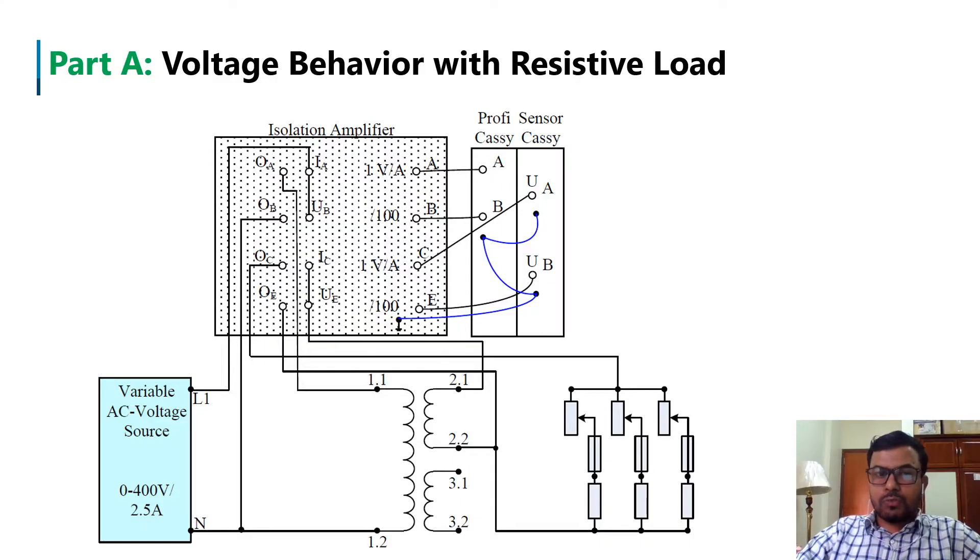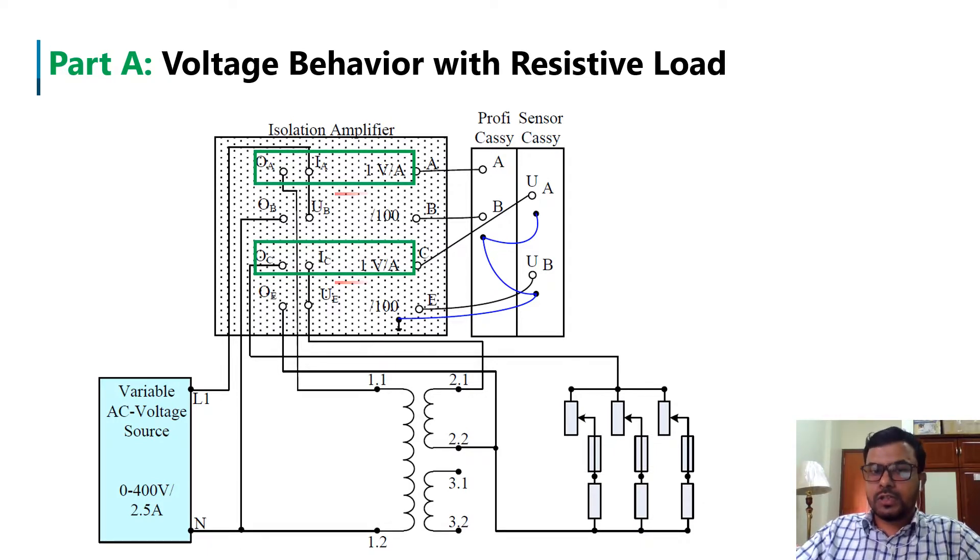This is the experimental setup to investigate the voltage behavior of the single phase transformer while it is loaded with resistive load. Here, the channels A and C of the isolation amplifier are used to measure the primary and secondary currents of the transformer. Whereas, primary and secondary voltages are measured using channel B and channel E, respectively.